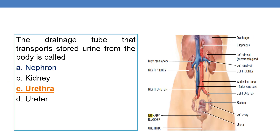Coming to the next question: the drainage tube that transports the stored urine from the body is called the urethra. The urethra is the drainage tube that transports the stored urine from the urinary bladder out of the body.